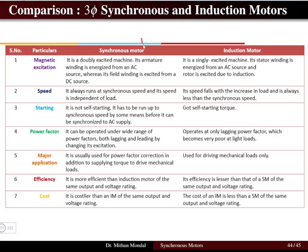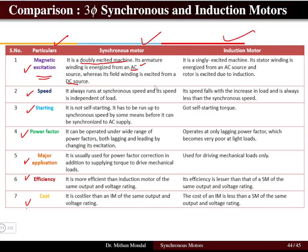Having known the merits and demerits, we now compare the three-phase synchronous motor and three-phase induction motor based on characteristics such as magnetization, speed, starting method, power factor, application, efficiency, and cost. Regarding magnetic excitation: the synchronous motor is a doubly excited machine requiring both a DC source for field winding and an AC source for stator winding, whereas the induction motor is a singly excited machine — its stator is energized from AC and the rotor is excited by induction, requiring no DC source.